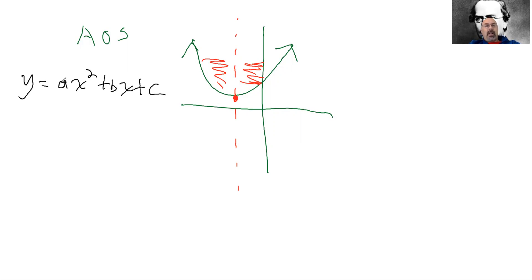our quadratic equations are y equals ax squared plus bx plus c. And we talked about in the last video that my a value tells me two things. It tells me one, the direction, right, does it open up or down? And two, the width of my parabola.